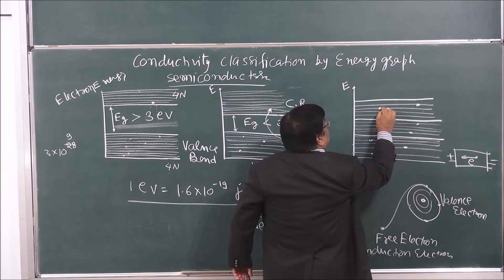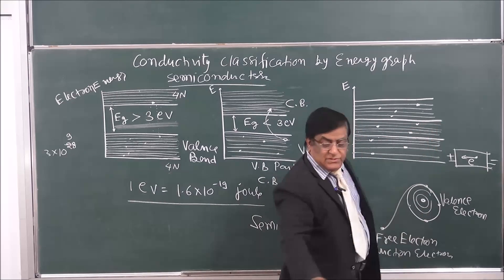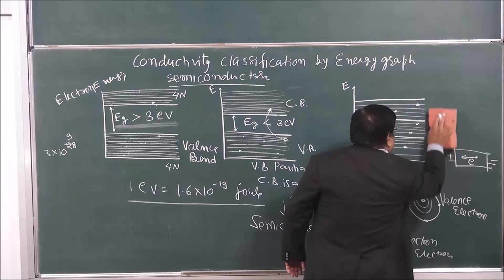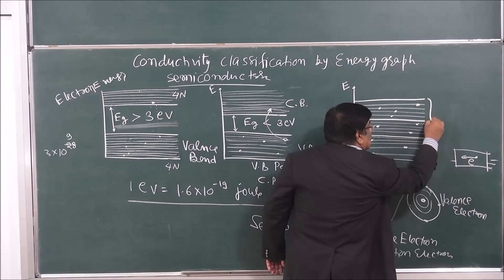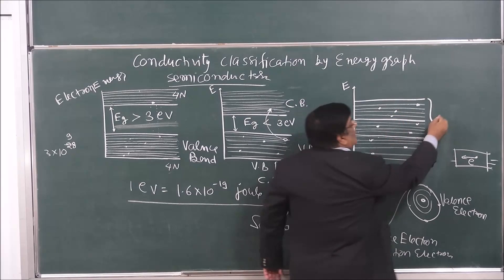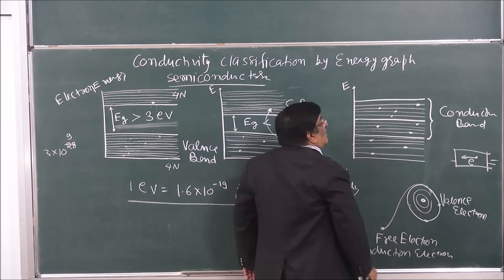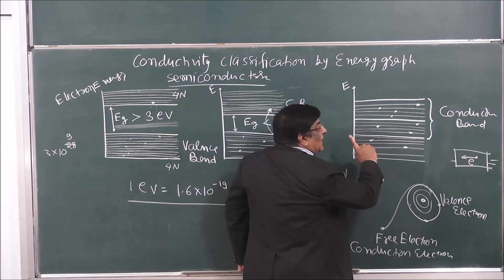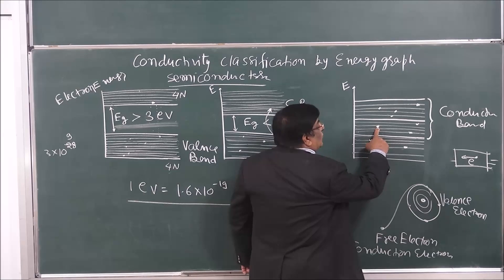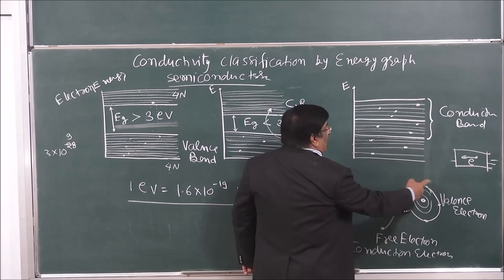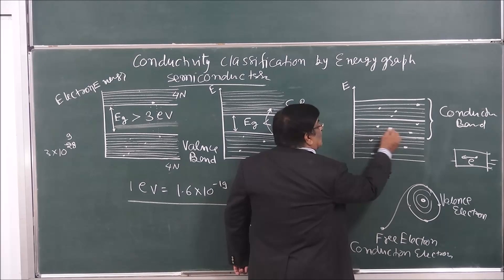All the electrons in this energy range are conducting, so this region is the conduction band. But the electrons below this threshold are not conducting — they are doing valency. However, there is an electron that was doing valency, and when an electric field is applied, it starts making the current. So it exists in both ranges.